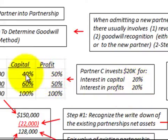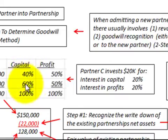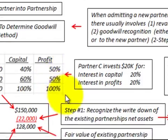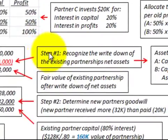Going over to our diagram, Partner C's capital interest is going to be 20% and their profit interest is going to be 20%. So let's go down and do our two-step process.